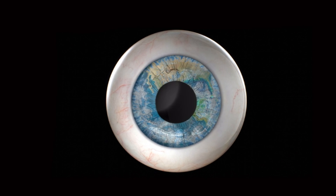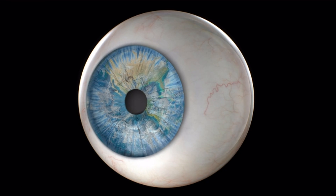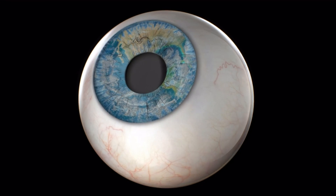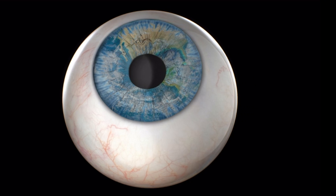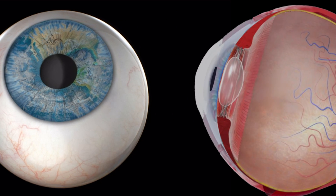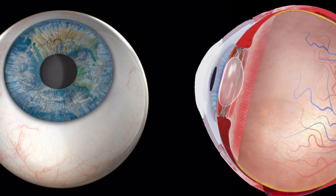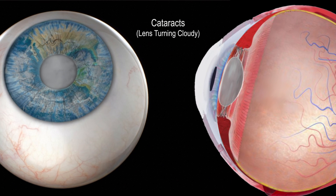To understand what is happening, let's take a look at a normal eye first. Shown here is a normal eye with a clear lens. Cataracts form when the lens becomes cloudy.